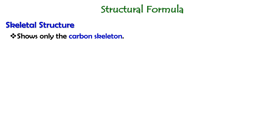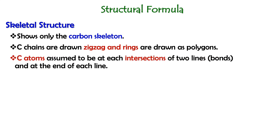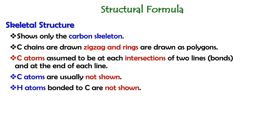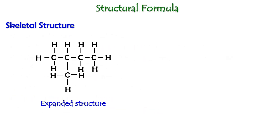Now let's look at the skeletal structure. The skeletal structure shows only the carbon skeleton. The carbon chains are drawn zigzag and rings are drawn as polygons. Carbon atoms are assumed to be at each intersection of two lines and at the end of each line. Carbon atoms are usually not shown, and hydrogen atoms bonded to carbon are not shown either. Functional groups are shown, and other atoms such as oxygen, chlorine, nitrogen, and so on are shown in the skeletal structure. Given an expanded structure of a molecule, the skeletal structure of that molecule would be like this.